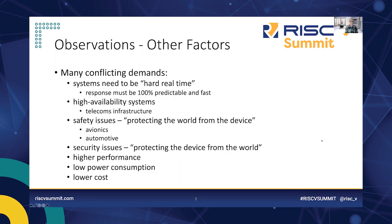There are other factors to consider. Systems typically need to be hard real-time — responsive in a 100% predictable way. They often need to be fast as well; real-time doesn't mean fast. There's also hard reliability: systems which must not crash. Safety and security are paramount — safety protects the world from the device, security protects the device from the world. These are critical in avionics, automotive, industrial, and medical systems, plus requirements for higher performance, lower power, and lower cost.